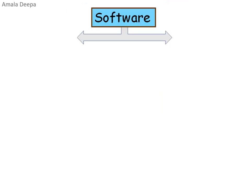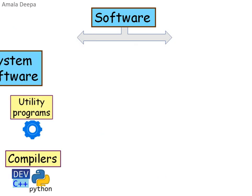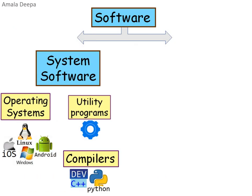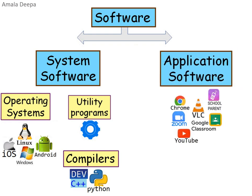Computer software can be classified into two types. First, system software — examples include operating systems, utility programs, and compilers. Second, application software — here you can see some application software which we use every day.